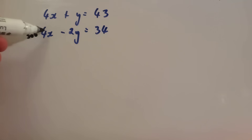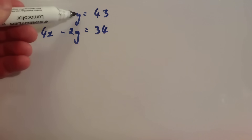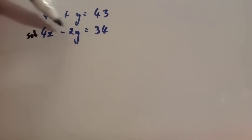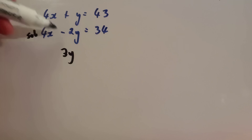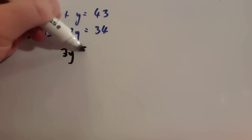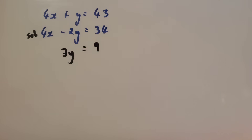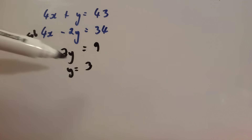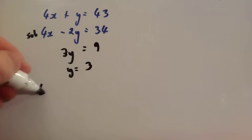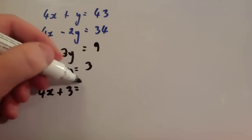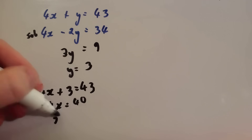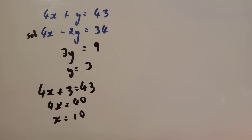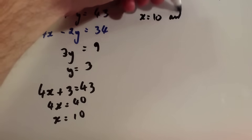4x subtract 4x is 0. Now for y subtract minus 2y: remember subtract and minus makes a plus, so you get y plus 2y which equals 3y. Then 43 subtract 34 is 9. So we have 3y equals 9, divide by 3 and y equals 3. Substituting y equals 3 into the top equation: 4x plus 3 equals 43, subtract 3 to get 4x equals 40, divide by 4 and x equals 10. So the solution is x equals 10 and y equals 3.